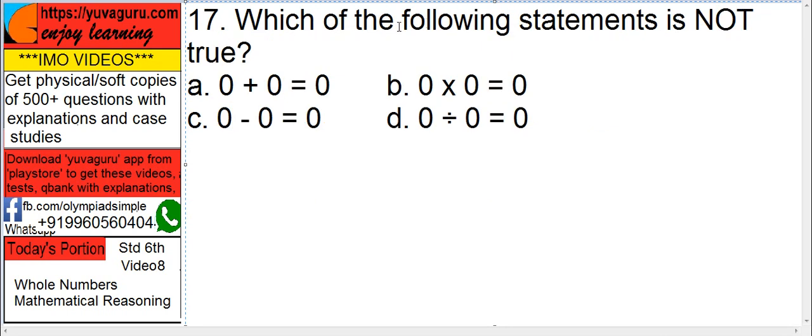Which of the following statements is not true? 0 plus 0 equals 0, 0 into 0 equals 0, 0 minus 0 equals 0, 0 divided by 0 equals 0.